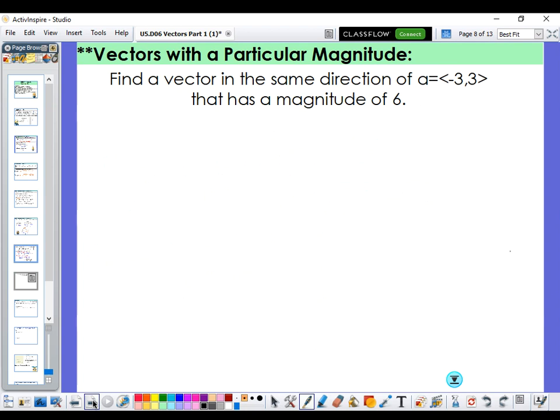Then we're jumping to another objective, which is finding a vector that is in the same direction as another vector, but with a different magnitude. So we're going to start with the vector <-3, 3>. And we need to make sure our new vector goes in the same direction as that vector, but we want it to have a magnitude of 6.